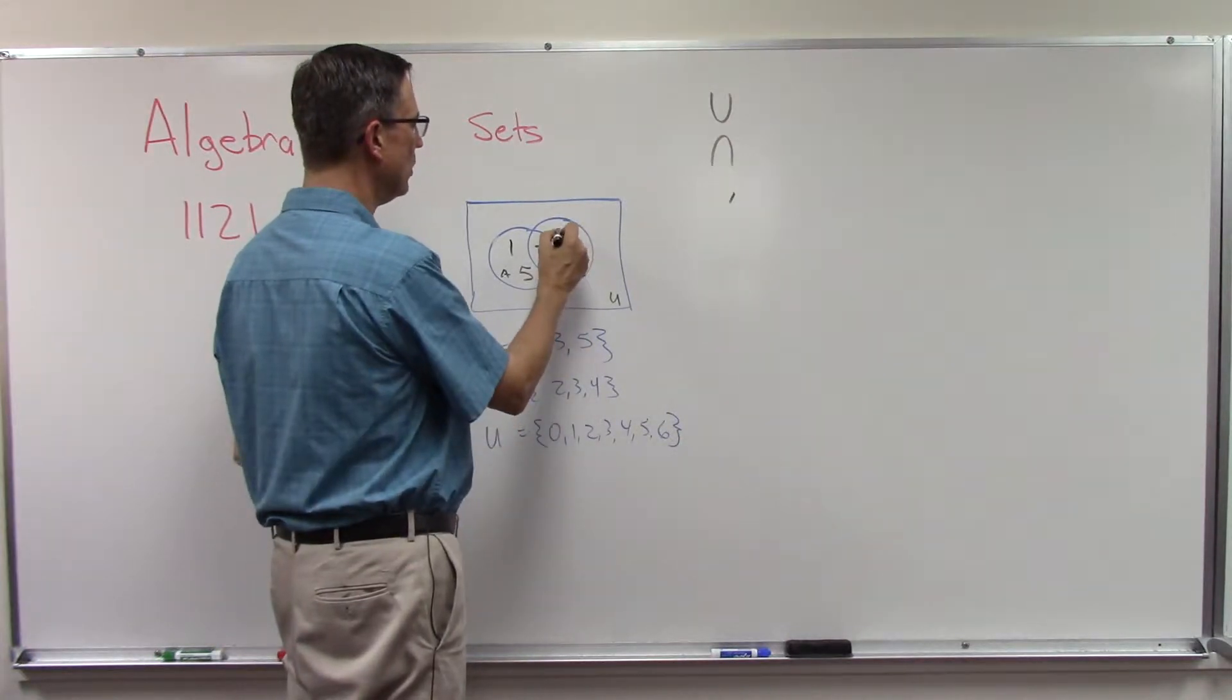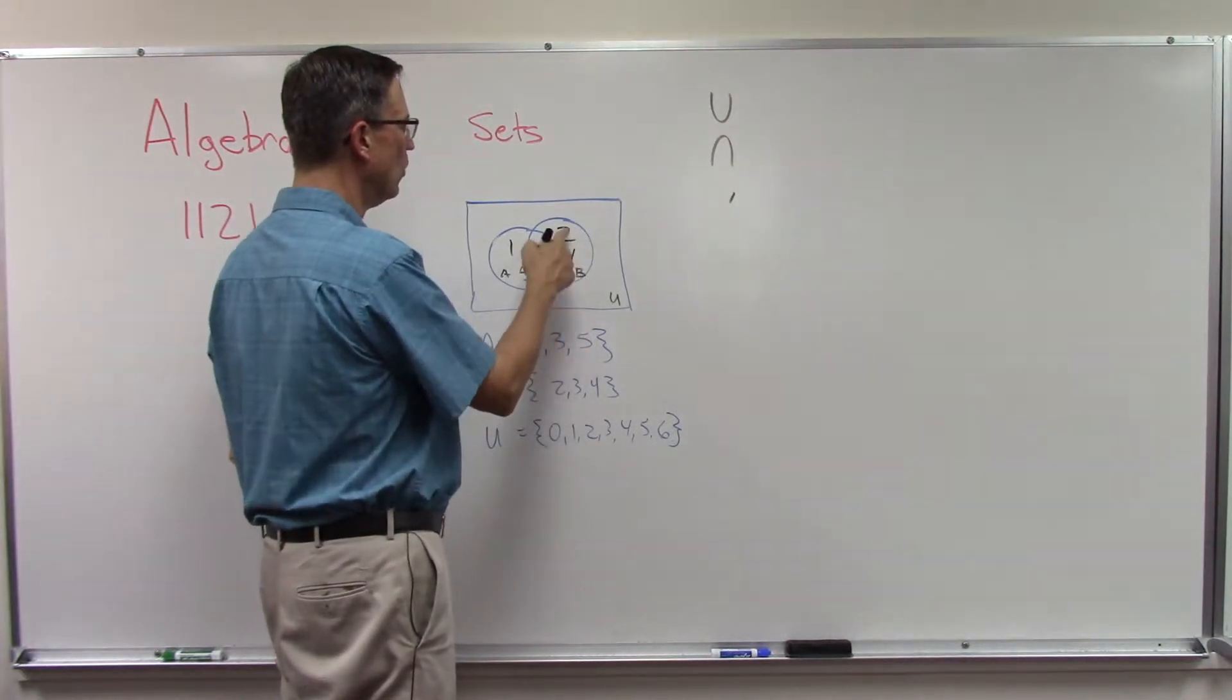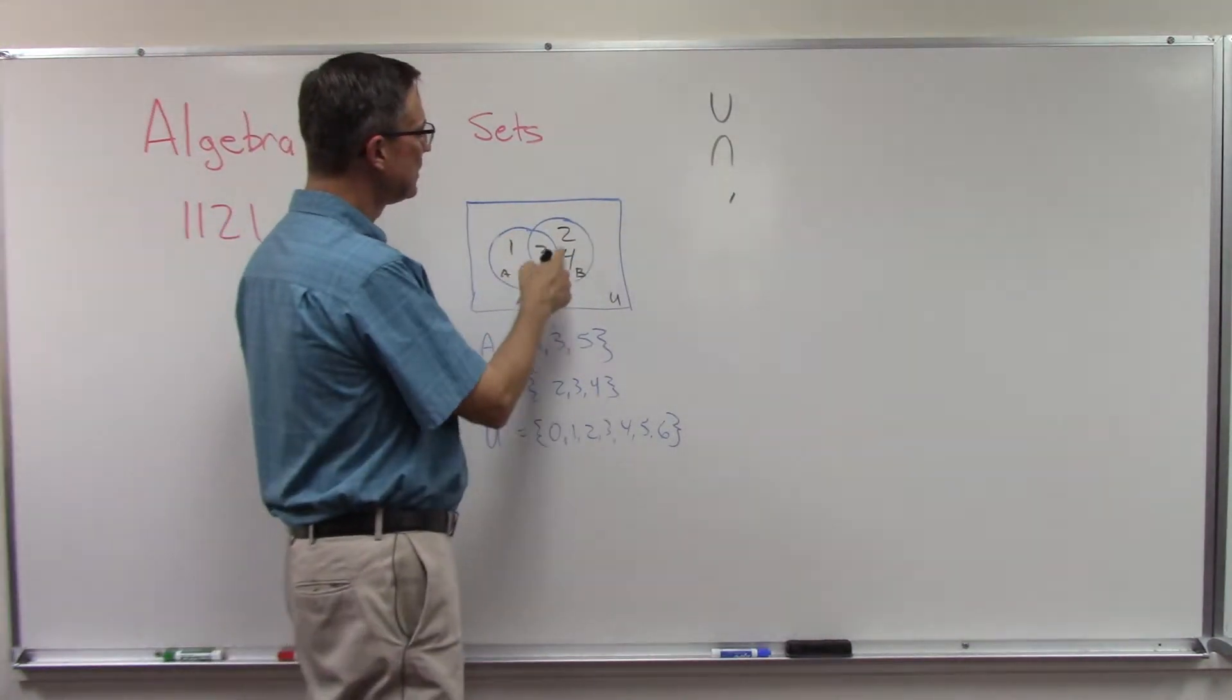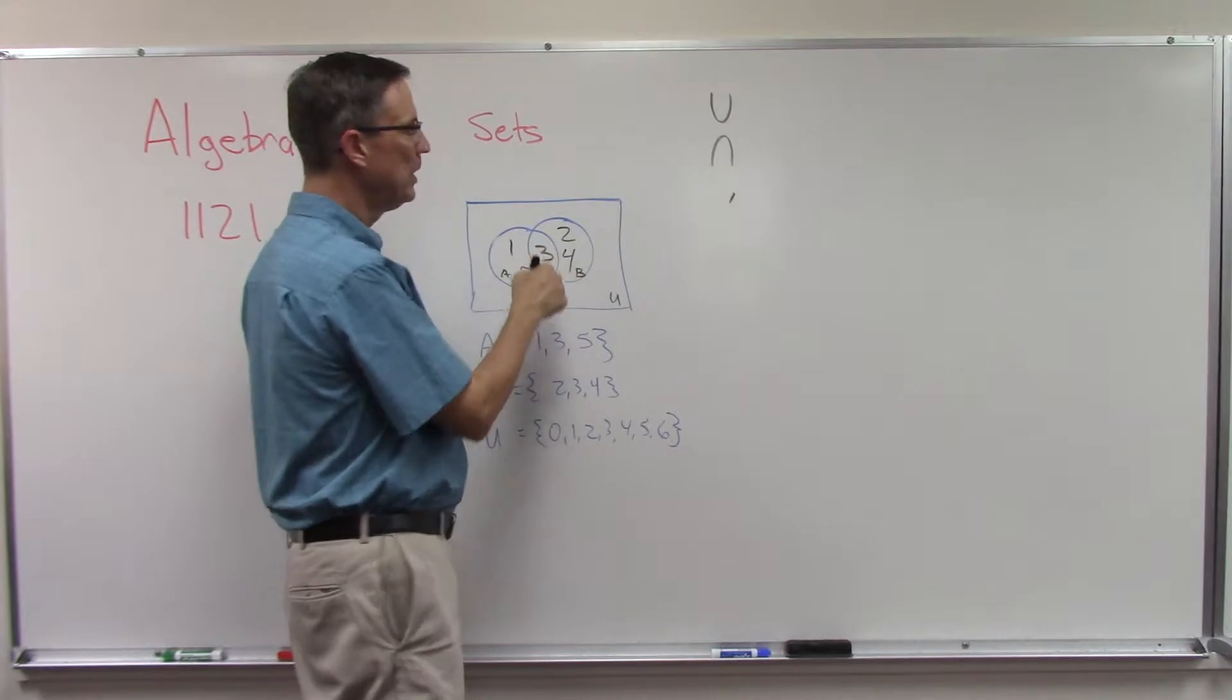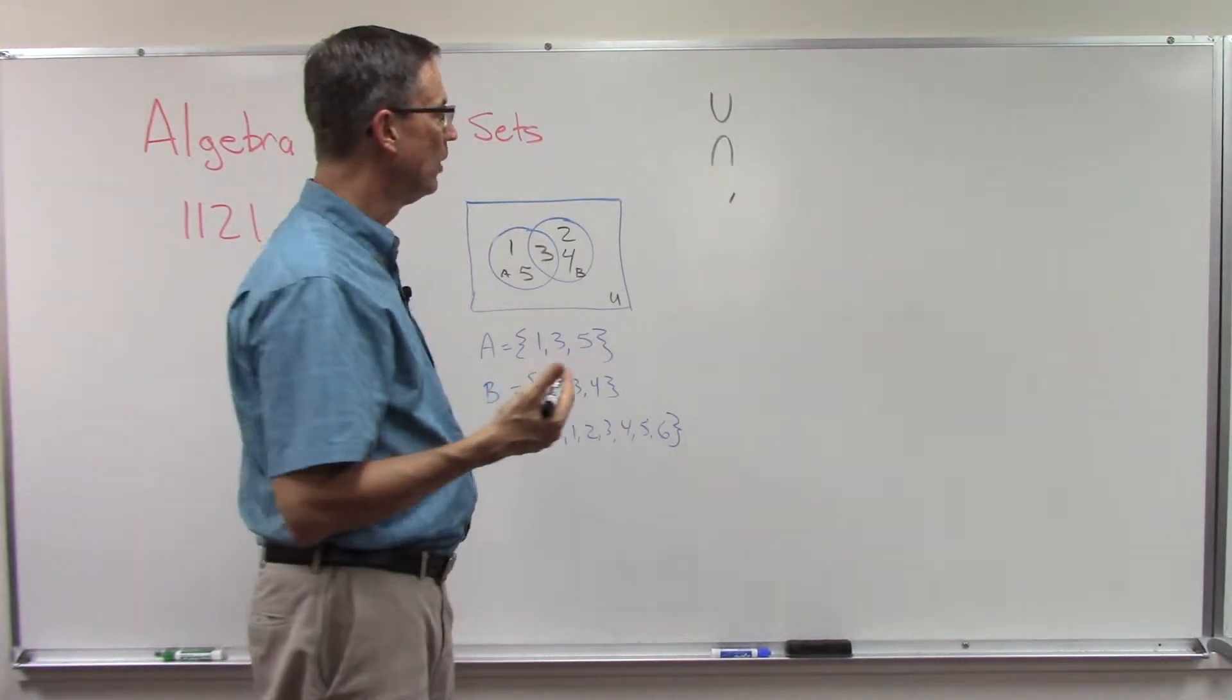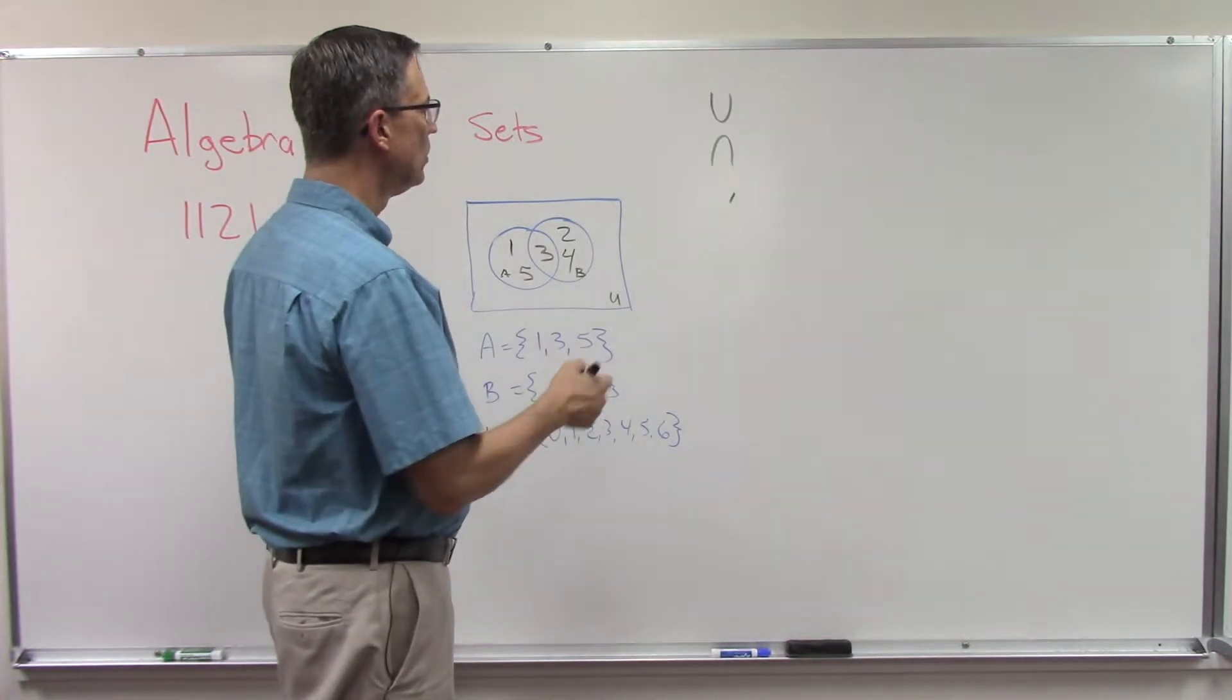Set B includes the numbers two three and four, so two three and four, those three numbers are inside circle B. And now we can see that they both have three in common, so we call that the intersection of those two sets. So there's a symbol that means intersection of two sets.